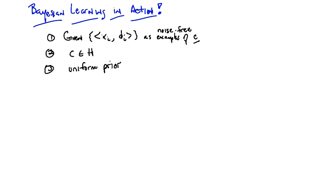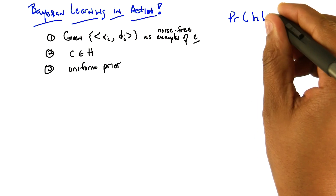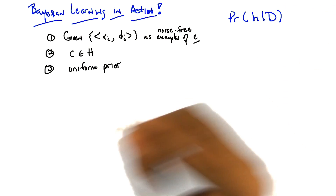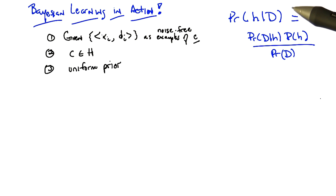In any case, these are our assumptions: we've got a bunch of data, it's noise free, the concept is actually in the hypothesis space we care about, and we have a uniform prior. So we need to compute the best hypothesis. Given that, we want to somehow compute the probability of some hypothesis given the data — that's just Bayes' rule. So in order to compute the probability of a hypothesis given the data, we just need to figure out all of these other terms. Let me write down some of the terms and you can tell me what you think the answer is.